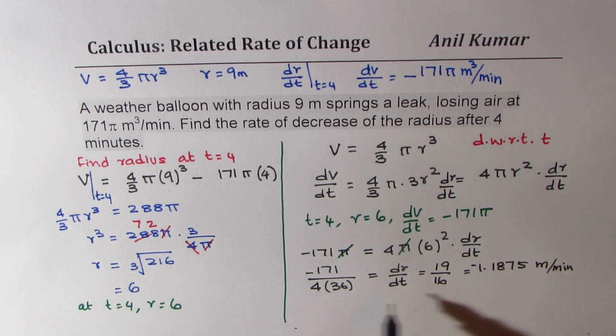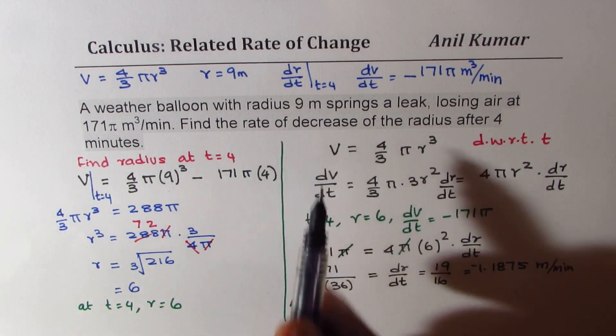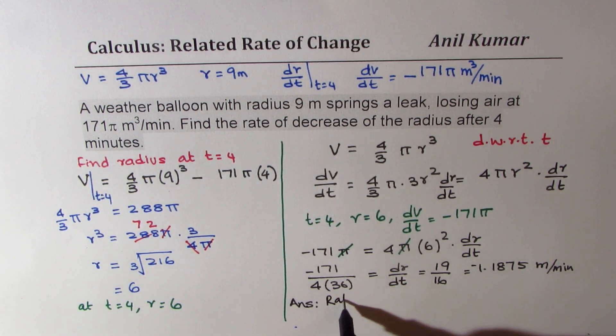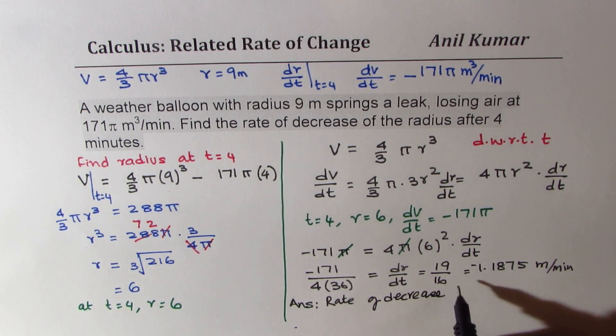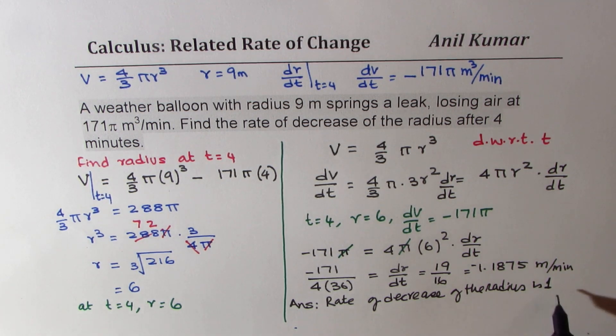So we can write down our answer. Rate of decrease of the radius is, so now no need to write minus since I've written decrease, 1.1875 meters per minute. Is that clear? So that is how we are going to solve this question.